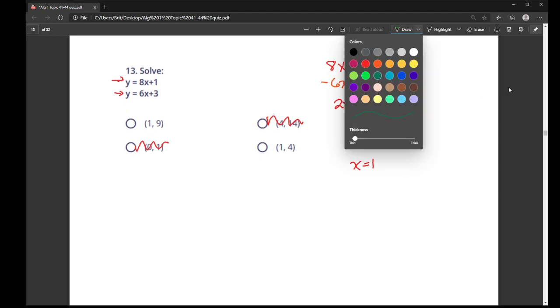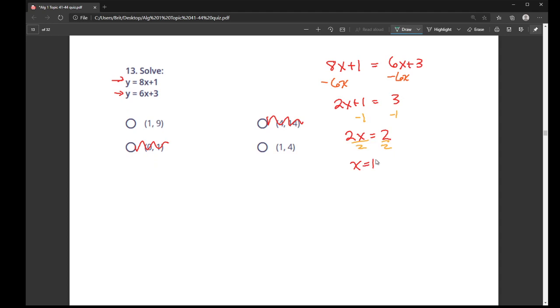Now what I'll do is I'll go through and substitute this x value in on one of my two equations. It doesn't matter which one I choose. In this case, I'm going to choose the second one just to be a little wild. So where the x is, I replace it with a 1. 6 times 1 is 6, and then 6 plus 3 is 9. So my solution is the ordered pair 1, 9.